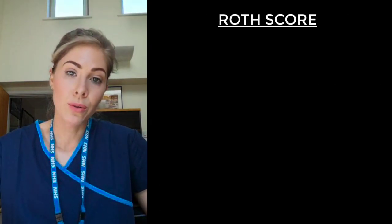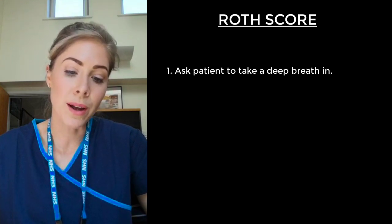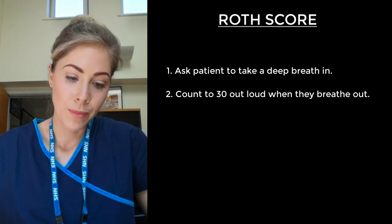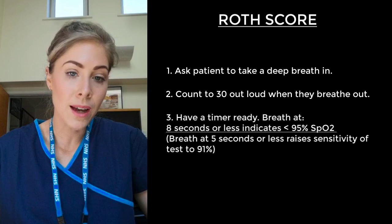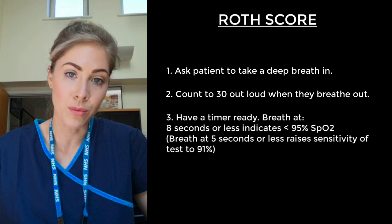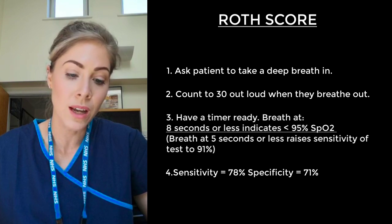A quick note on the Roth score: this is used to assess oxygen saturations. It is not validated but is promising. Ask the patient to take a deep breath in, and as they breathe out, count to 30 in their own language out loud. Have a timer ready — if the patient takes a breath at eight seconds or less, this indicates saturation levels of less than 95%. This test has a sensitivity of 78% and specificity of 71%, so make your own choice whether to use or rely on it.